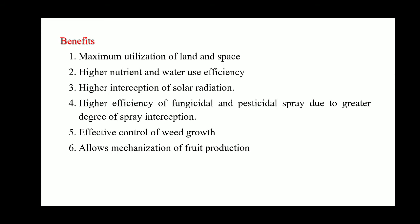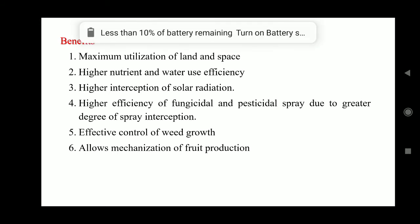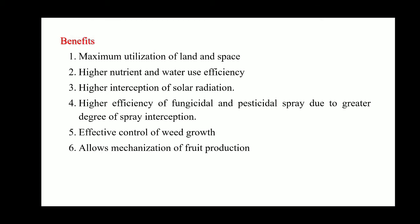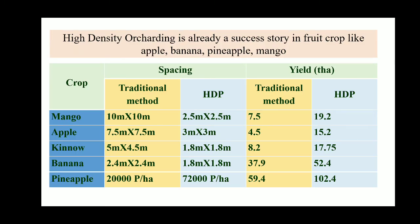The benefits of HDP are: maximum utilization of land and space; higher nutrient and water use efficiency; higher interception of solar radiation; higher efficiency of fungicidal and pesticidal spray due to greater degree of spray interception; effective control of weed growth; and it allows mechanization of fruit production.